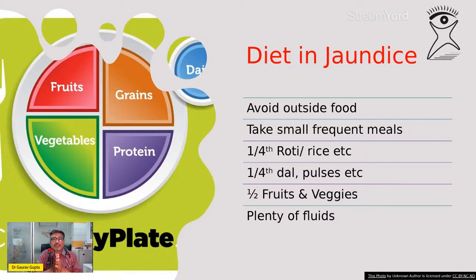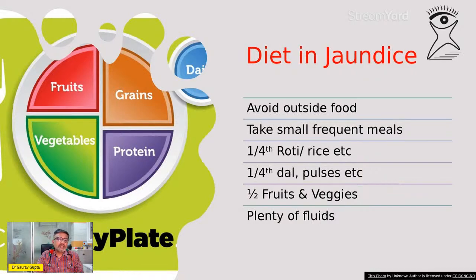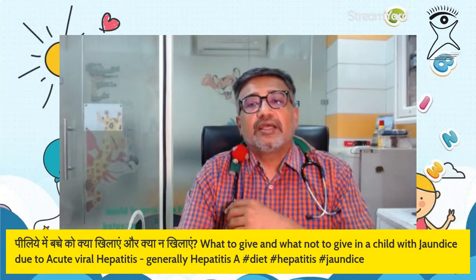Avoid kya karna hai — avoid things which are heavy for the child. So fried cheezein hain, fatty cheezein hain, tali hui cheezein — yeh bachcho mein avoid karni zaroori hain. Isse nausea badhega aur problems badh sakti hain.